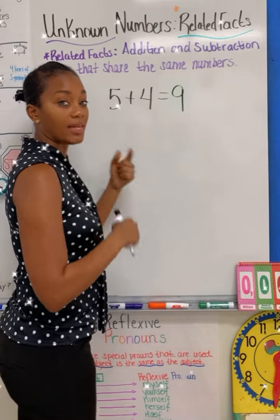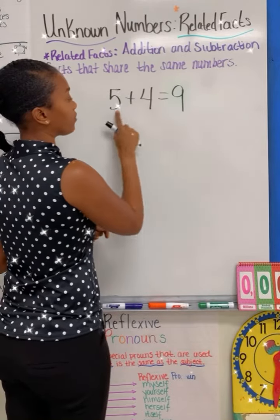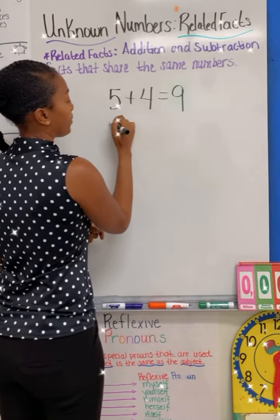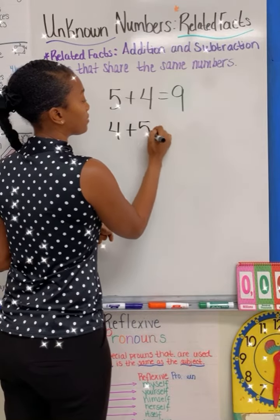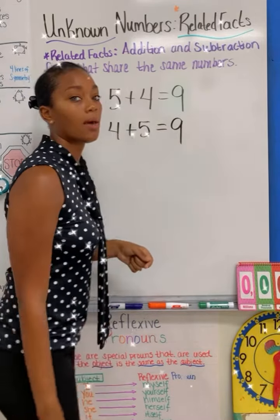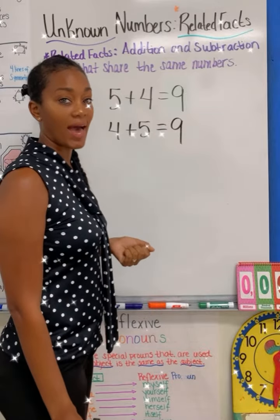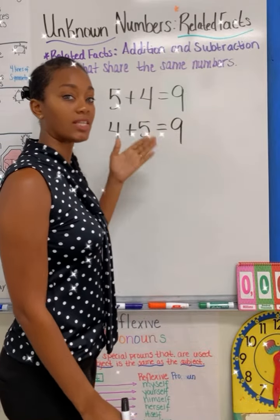If I want to find the related fact, I have to reverse the first two addends and put four plus five is equal to nine. But there is a related fact that I can use for these set of numbers.